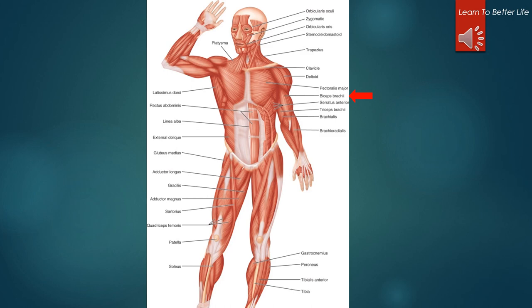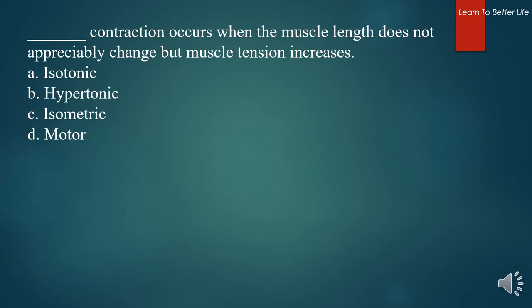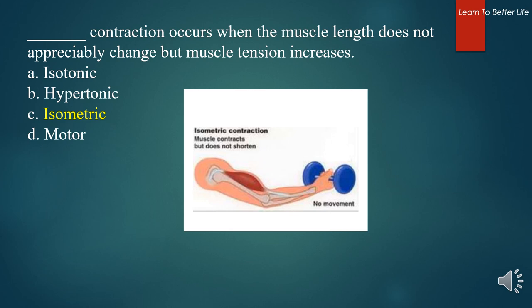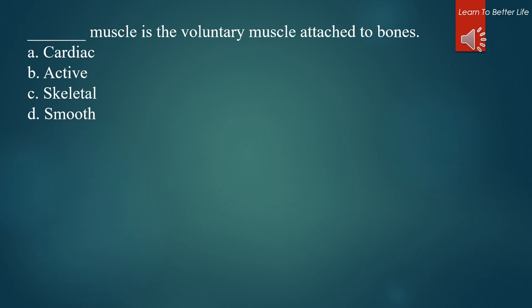What muscle is the voluntary muscle attached to bones? A. Cardiac. B. Active. C. Skeletal. D. Smooth. The answer is C. Skeletal.